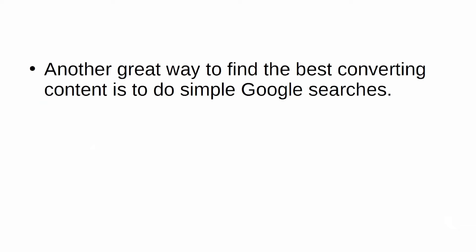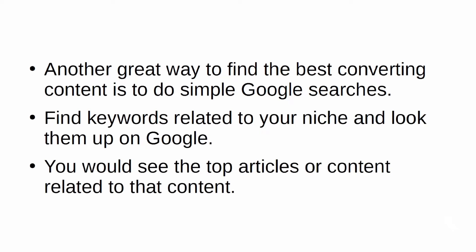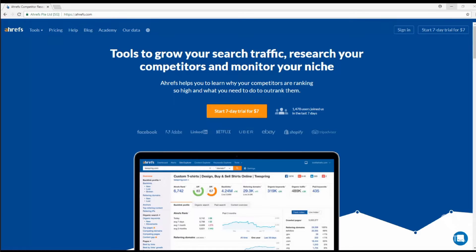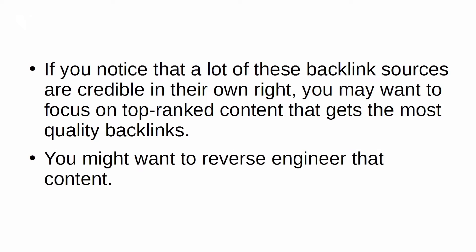Top Search Results with Great Backlinks: another great way to find the best converting content is to do simple Google searches. Find keywords related to your niche and look them up on Google. You'll see the top articles or content related to that topic. Use tools like ahrefs.com to see the backlinks of these articles. If a lot of those backlink sources are credible, focus on top-ranked content with the most quality backlinks and reverse-engineer it.